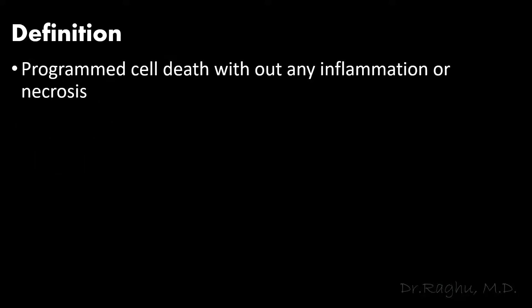Apoptosis is defined as programmed cell death. The meaning of 'programmed' here is that it's a controlled cell death. If the cell death becomes uncontrollable, it results in inflammation and necrosis. Hence, there is no inflammation or necrosis in apoptosis, but the cell is still dying.